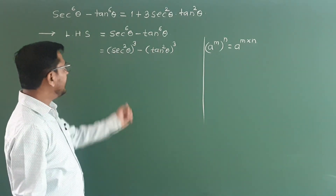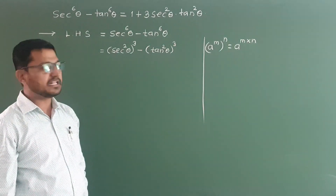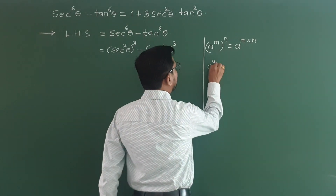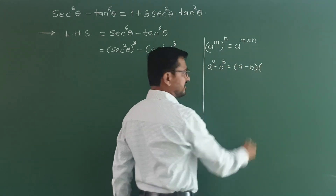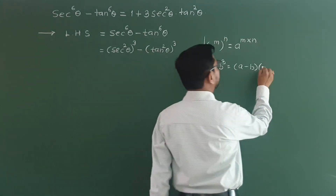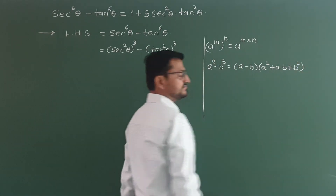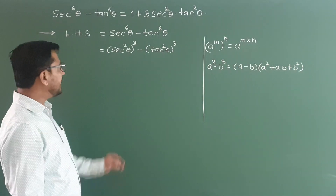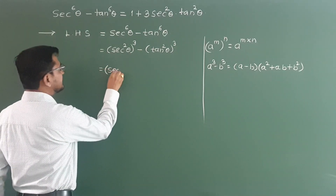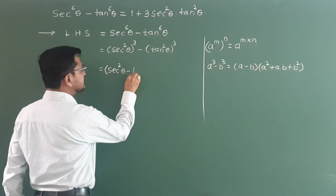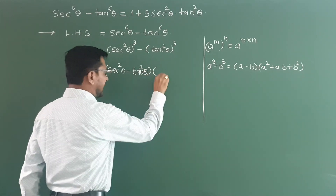Now we have sec square theta cube minus tan square theta cube, so the a cube minus b cube formula. We should know it: a cube minus b cube is nothing but (a minus b) in the first bracket, and in the second bracket (a square plus ab plus b square). By using this formula, this can be written as — in the first bracket: sec square theta minus tan square theta.